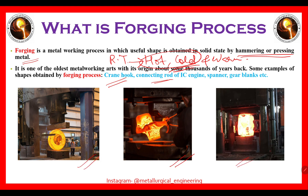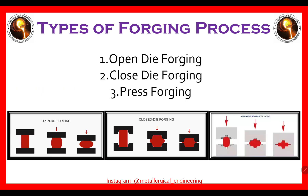The three most common types of forging processes are open die forging, closed die forging, and press forging. In open die forging there are no constraints available — this is the initial step. In closed die forging, constraints are available at the sides.